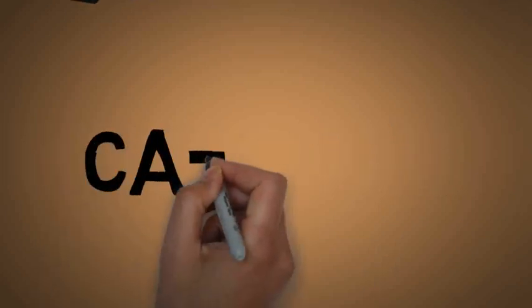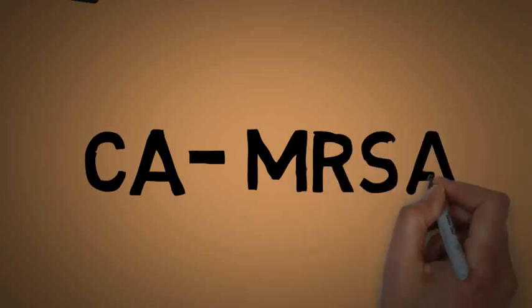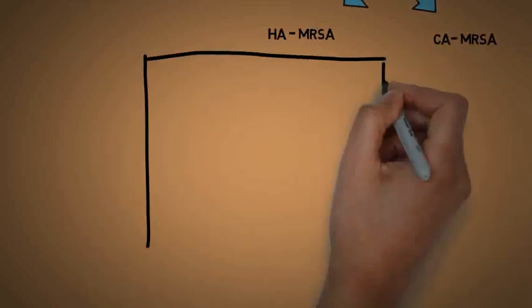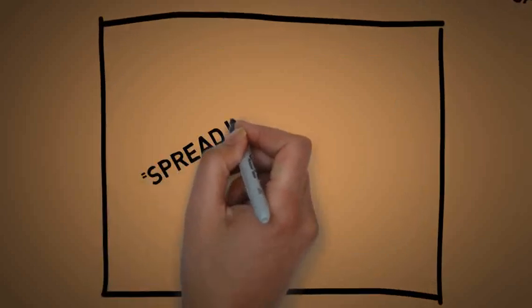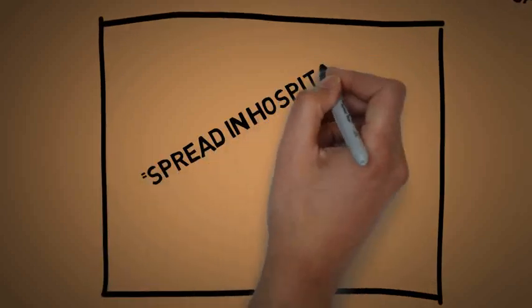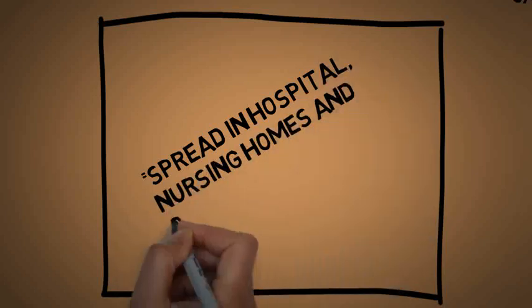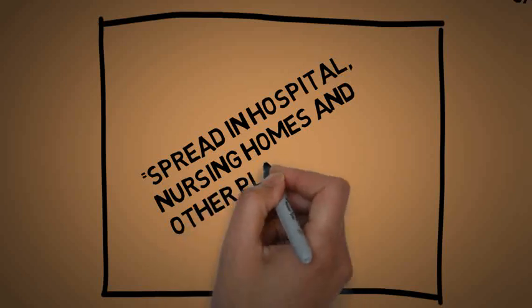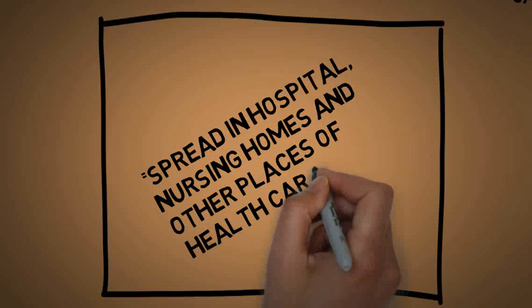HA-MRSA is Healthcare-Associated MRSA. CA-MRSA is Community-Associated MRSA. HA-MRSA infections spread in hospitals, nursing homes, and other healthcare places. It's a common type of MRSA and usually occurs in people aged 68 and above.